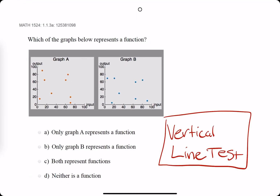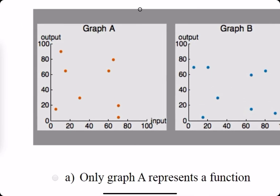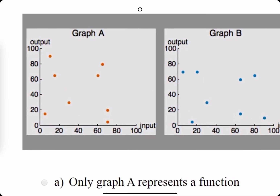This goes back to algebra a little bit, where you may have learned about the vertical line test. What that says is we're acting as if we're drawing vertical lines on the graph, and we're trying to verify whether or not two points lie on that vertical line. If two points exist on that vertical line, then it is not a function.